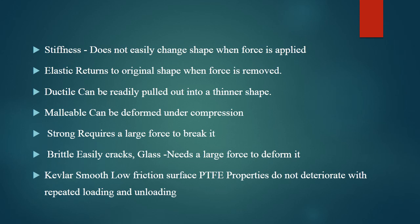Elastic returns to original shape when force is removed, and non-elastic doesn't regain its original shape. Next, ductility — the material can be easily pulled out into a thinner shape. If the material can be altered by applying force and made into a thinner dimension, it is called ductility or a ductile property.